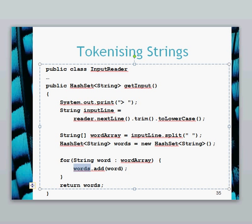Finally, we return our HashSet of type String. So rather than returning a single string, we're going to return a HashSet with a number of different strings which we can then compare later. That's step one of the process of comparing words — we've got the words and isolated each one. The next job, in the next video, is going to be to map those specific words to responses. I'll see you then.